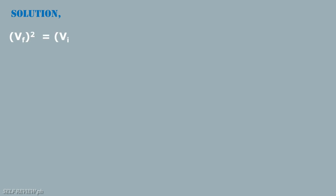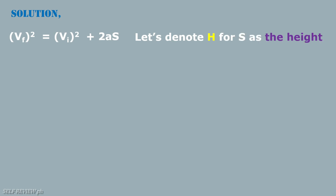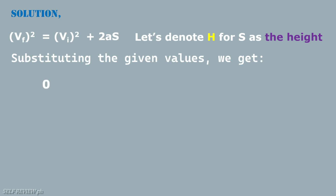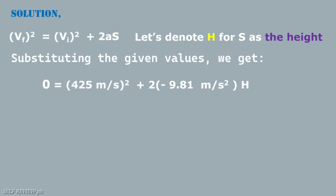Solution: Using the standard formula for uniform acceleration — final velocity squared equals initial velocity squared plus 2aS — let's denote H for S as the height. Substituting the given values, we get 0 equals the square of 425 meters per second plus 2 times negative 9.81 meters per second squared times the height. The acceleration is negative 9.81 m/s² because the bullet is shot vertically upward against gravity, causing it to decelerate.